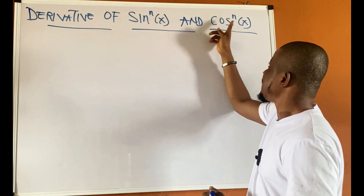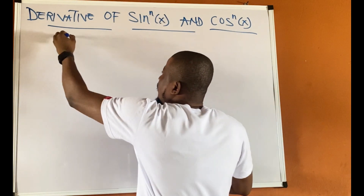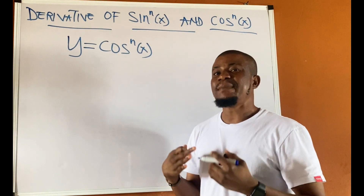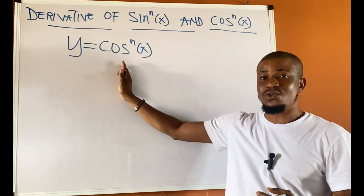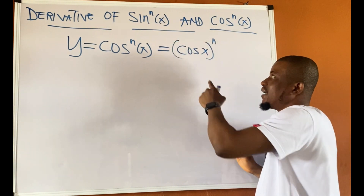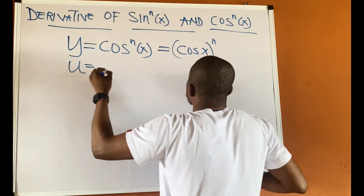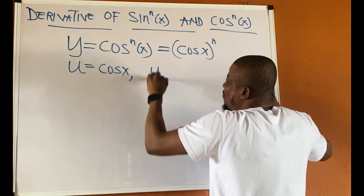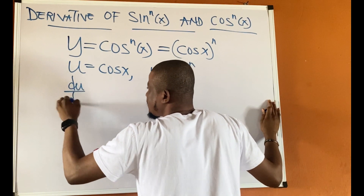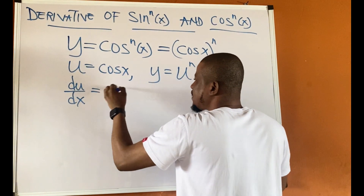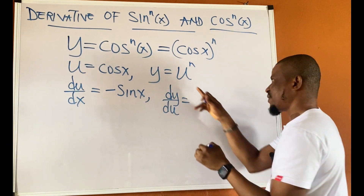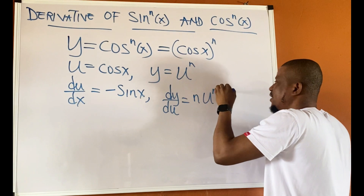Now let's talk about cos to the power of n of x. If you are given a function y equal to cos to power n of x, the same approach we used on the sine function applies. Simply rewrite this as cos x to power n, identify our u to be cos x, and write y to be u to power n. Differentiating u with respect to x gives negative sin x, and differentiating y with respect to u gives n·u^(n−1).